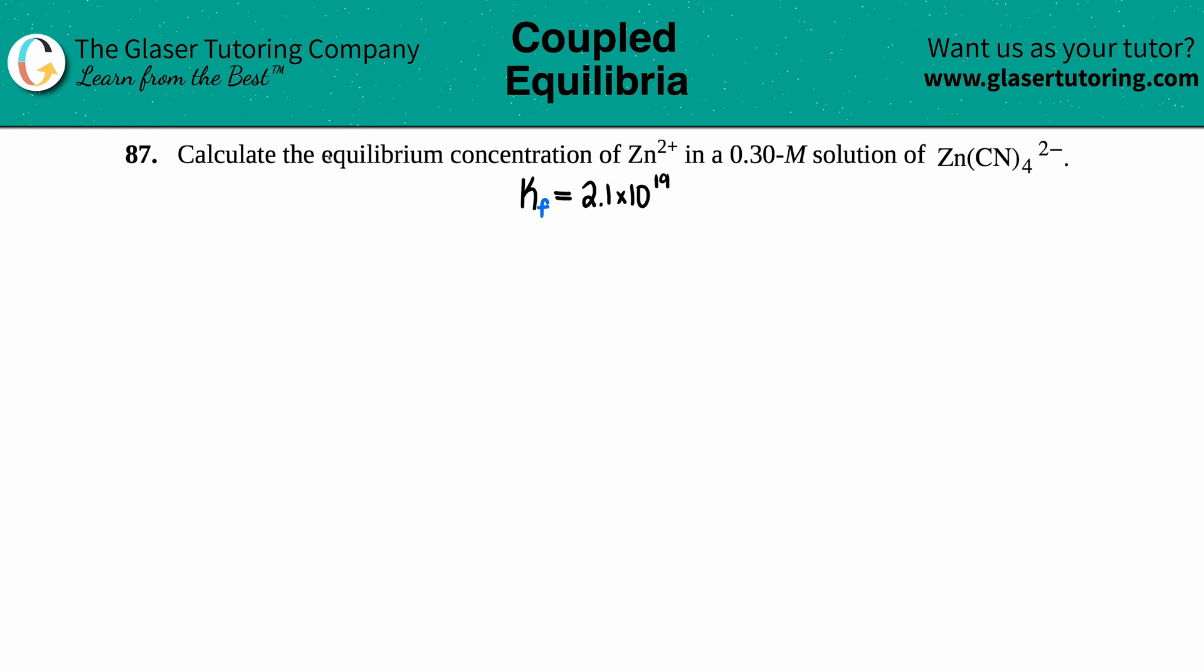Number 87: Calculate the equilibrium concentration of Zn²⁺ in a 0.30 molarity solution of zinc cyanide Zn(CN)₄²⁻. To do this problem, I went back into the textbook to find any K values and found that the equilibrium formation constant Kf is 2.1 times 10 to the 19th for this complex ion.